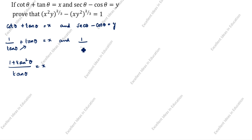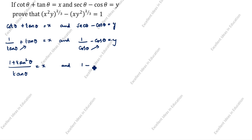And for secant theta, we write 1 by cos theta minus cos theta is equal to y. Cross multiply: 1 minus cos squared theta divided by cos theta, giving cos squared theta equal to y.